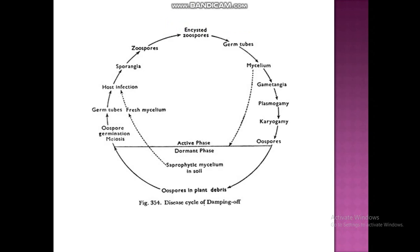The disease cycle of damping off: oospores in plant debris germinate producing germ tubes, which cause host infection, then sporangia produce zoospores with germ tubes that produce mycelium. Gametangium formation is the active phase, and oospores in plant debris represent the dormant phase, as seen in the disease cycle diagram.